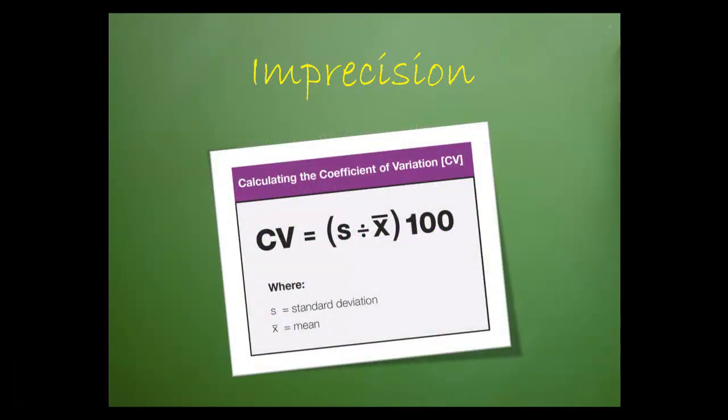To calculate CV, divide the laboratory's standard deviation by the laboratory's mean. Then convert the results to a percent by multiplying by 100.